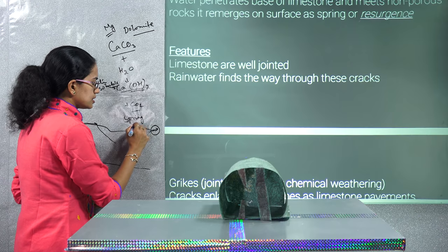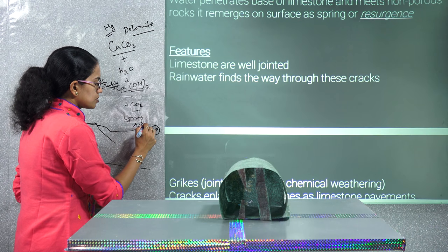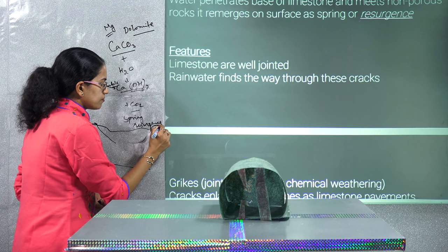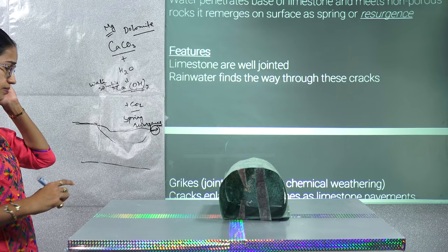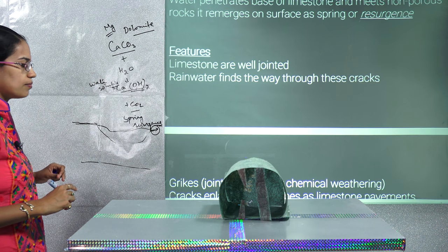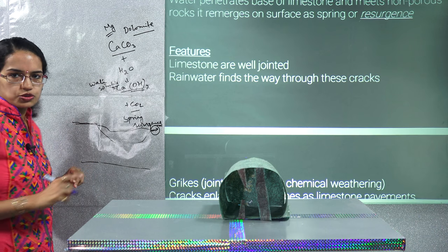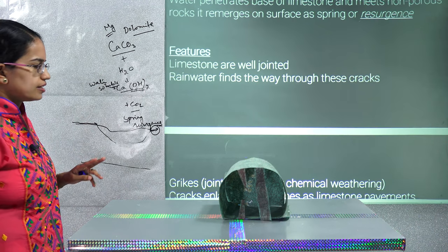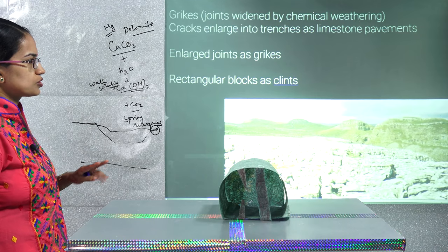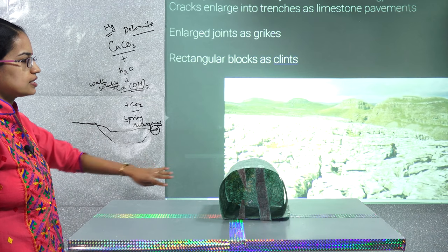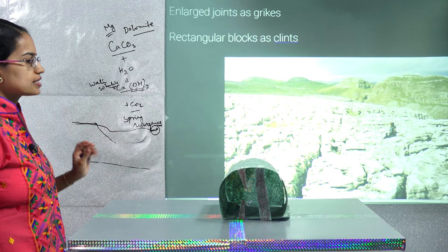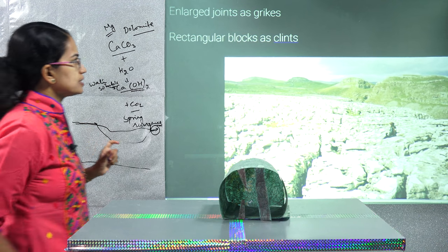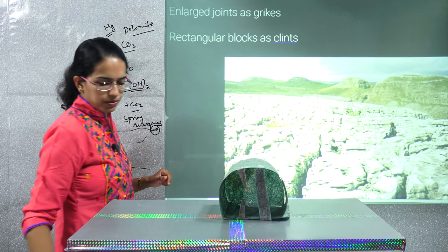The region where the stream reappears is known as a spring or resurgence. Spring or resurgence is very important to understand in limestone topography. Two important terms in limestone topography are grikes and clints.